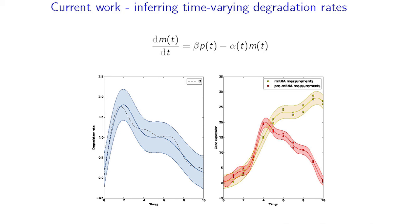A technical note: we are also inferring a time-varying degradation rate. In the previous model, inference of delays was robust to changes in degradation rate. But changes in degradation rate can yield very different responses — for instance, a degradation rate that goes up sharply and then reduces can produce incredibly sharp dynamics and then maintain mRNA at a high level by switching off degradation, giving a step function-like response. This is quite useful in a systems biology scenario, though technically challenging to integrate into the Gaussian process framework.